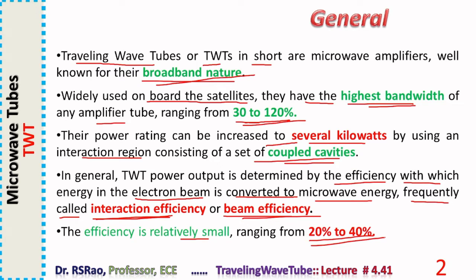TWTs are well known for their broadband nature. The reason is the slow wave structure, which is a non-resonant circuit. Resonant circuits limit the bandwidth of a device. In TWTs, non-resonant structures are used, so the factor that limits bandwidth is absent, making TWTs capable of enormous bandwidth.